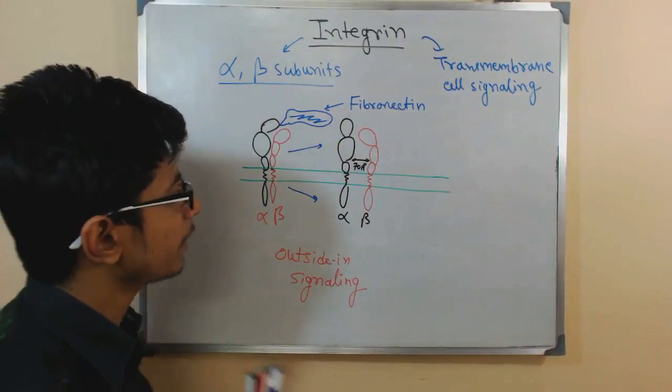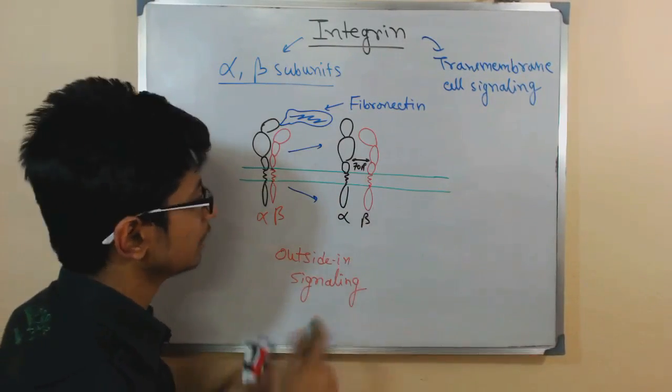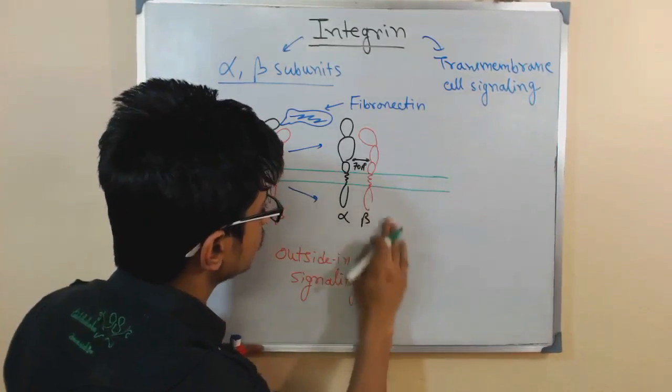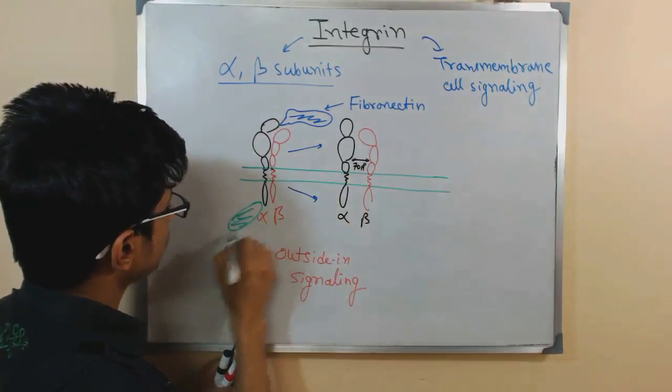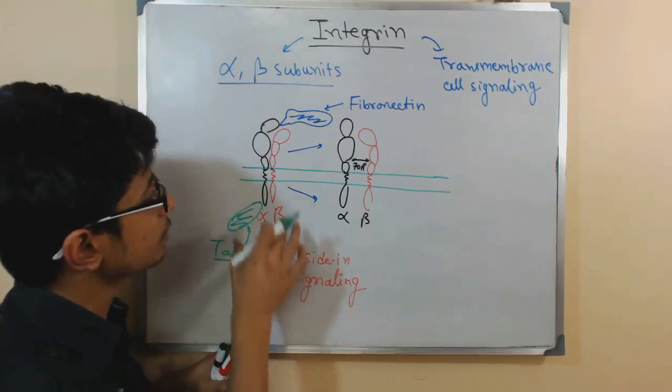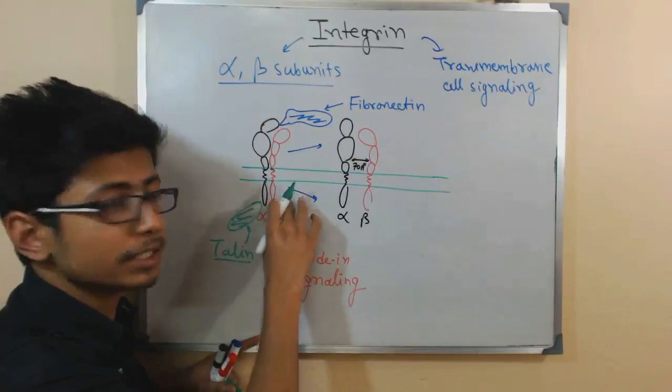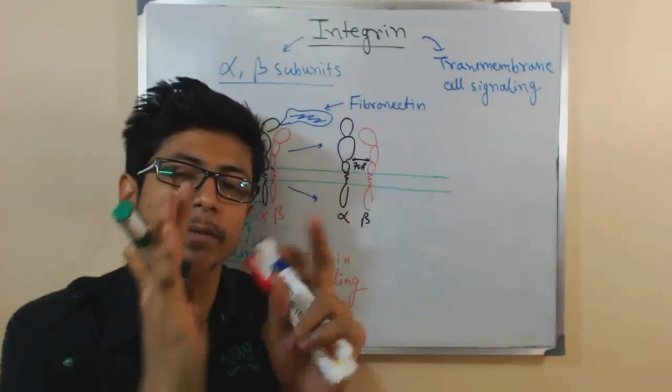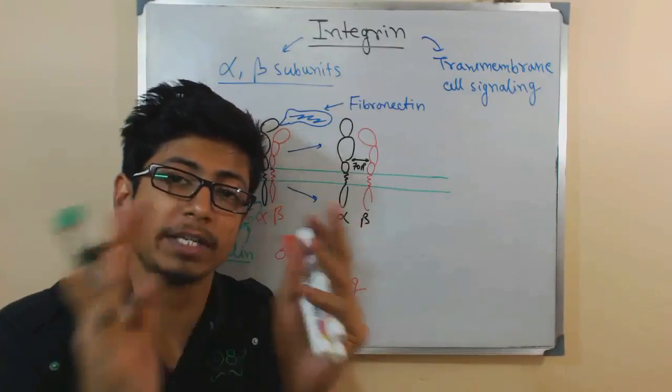Same thing can result if something binds here, for example, talin. Another protein called talin, if it adheres to this from inside the cell to the intracellular section of this integrin, it will put some signaling. And again, same thing will occur. Alpha and beta subunit will separate from each other 70 angstrom.